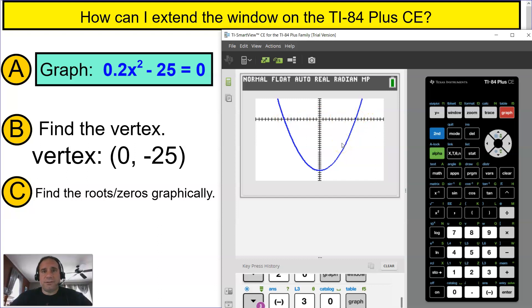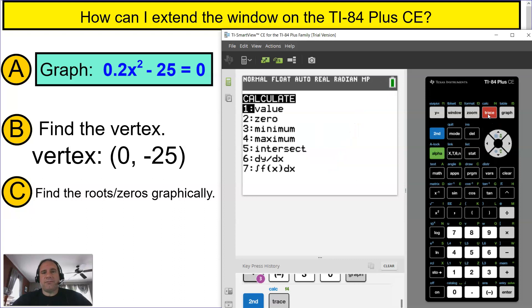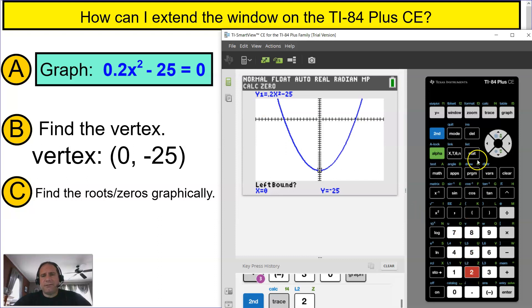So how do I find the roots now? Well, now I can find the roots by simply putting second function and trace again. And now the roots are the zeros. I'm going to press 2, and now it's going to say left bound. I'm going to move this cursor all the way to the left of the first time it crosses the x-axis. Now I can press enter, and then I can move it to the right after it crosses the x-axis and press enter. And then guess. And it is negative 11.18.